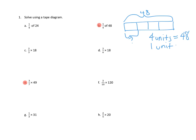So then I want to know, what is one unit? How big is one unit? That looks like we've got to take 48 divided by four. If four units is 48, then one unit would be 48 divided by four. 48 divided by four is 12. Four times 12 is 48.